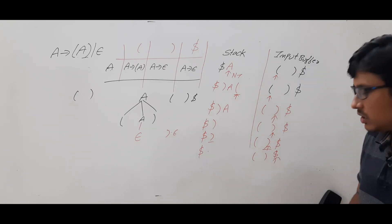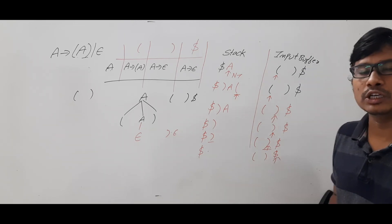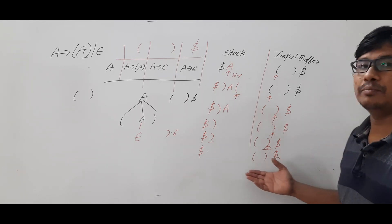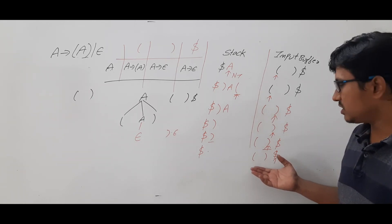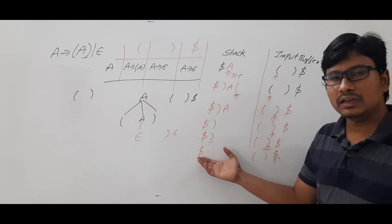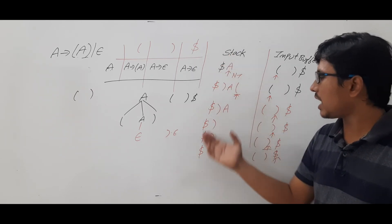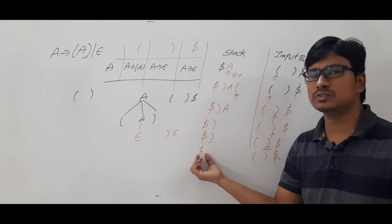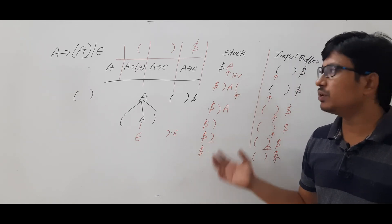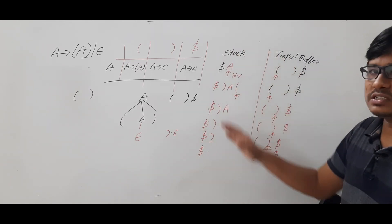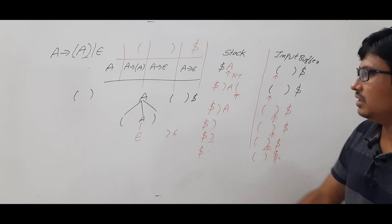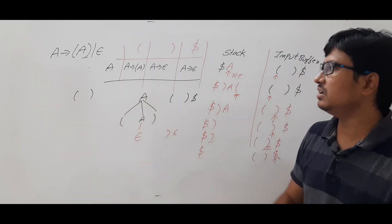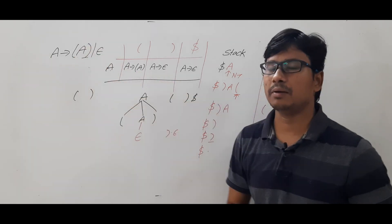The input pointer is now pointing to dollar. The string is completed. At the stack, the bottom of the stack also has only dollar. We can say the parsing procedure is completed successfully. The parse tree obtained is the parse tree for this string derived from the grammar.